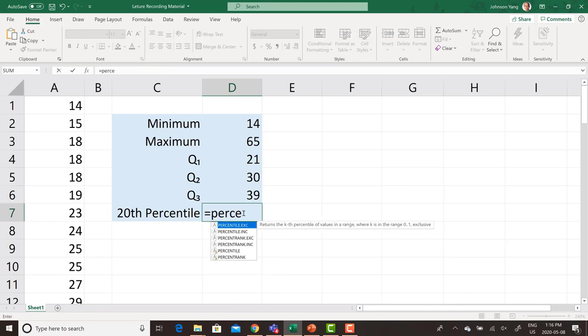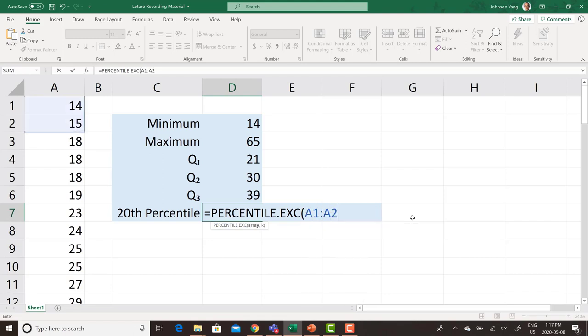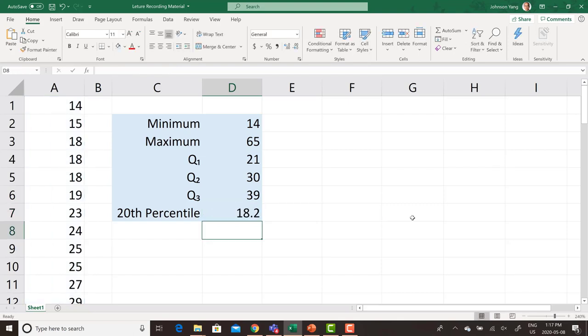For percentile. Equal. Percentile. Again. Here also we have two choices. Exclusive or inclusive. Which is exclusive. A1, A25. And then we can directly type in 20%, or you use 0.2. That's fine. So here give us answer 18.2. Exactly the same as what we just calculated. See you next time.